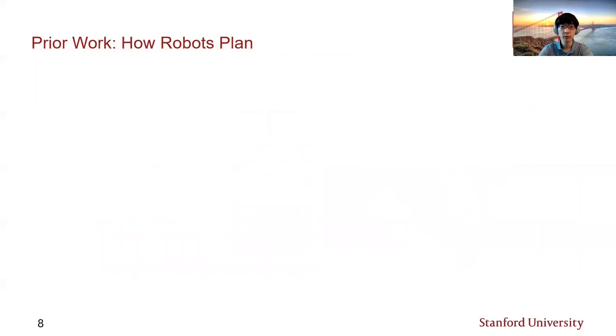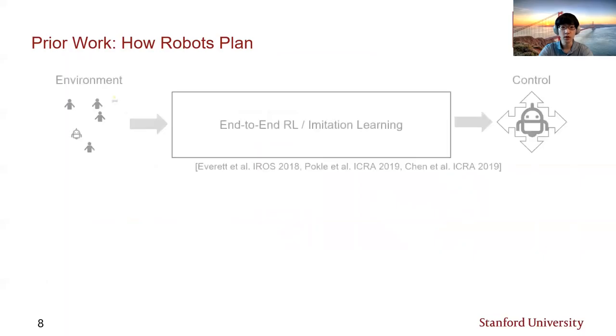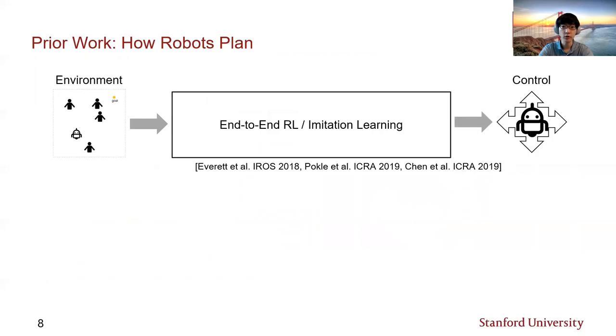We begin by reviewing relevant prior work in the literature. There are two types of approaches in terms of how the robot plans its motion. First, end-to-end approaches try to address this problem by directly learning and mapping from a representation of the surrounding environment to a motor command by means of reinforcement learning or imitation learning. This approach has the advantage that the policy execution is very efficient once it's learned. However, data-driven policies are hard to modify at runtime, reducing flexibility of the framework to obtain a specifically desired robot behavior in different tasks or scenarios.